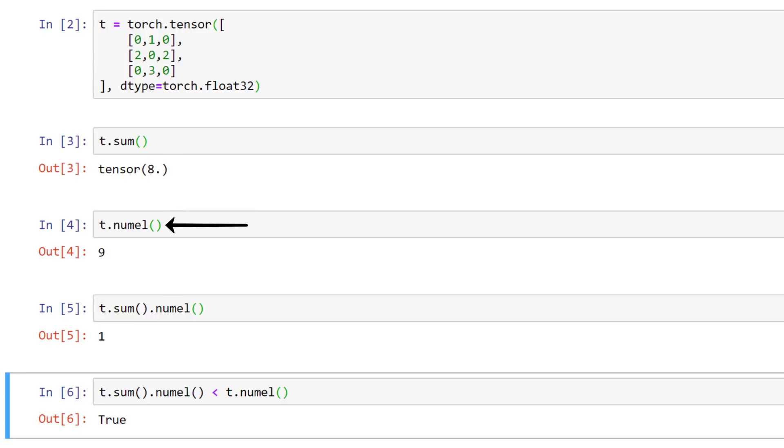Checking the number of elements in the original tensor against the result of the sum method call, we can see that indeed, the tensor returned by the call to sum contains fewer elements than the original. Since the number of elements have been reduced by the operation, we can conclude that this sum operation is a reduction operation. So that's our first example of a reduction operation. Let's look at some other common ones.